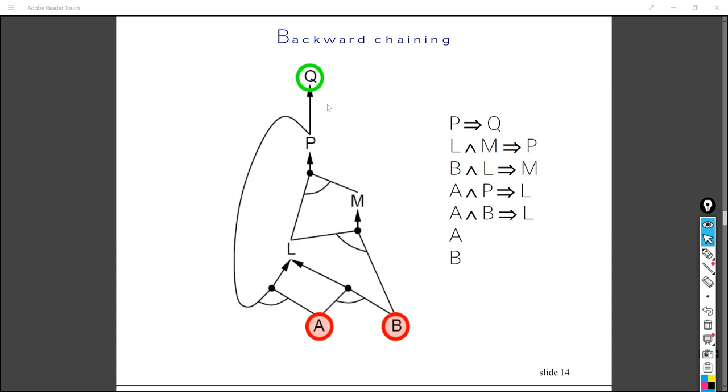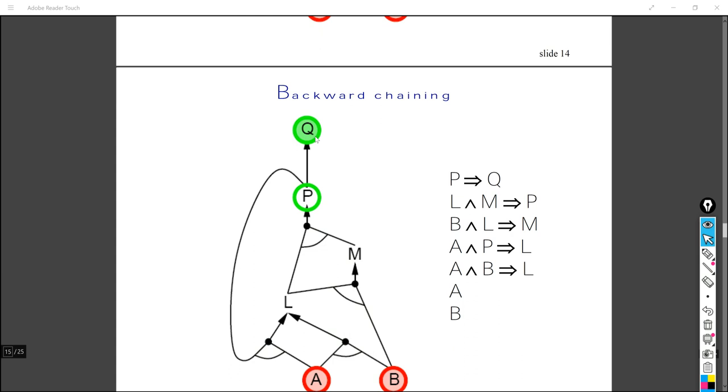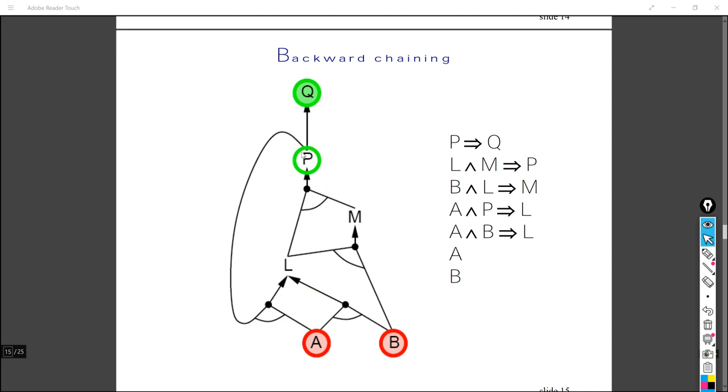So first of all, if we want to prove that Q is true, then we have to prove that P is true, since that is the only way. However, when we want to prove P is true, there is only one way, which is to prove both L and M are true, since this is the only way that points to P here.